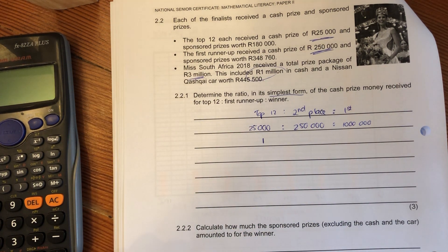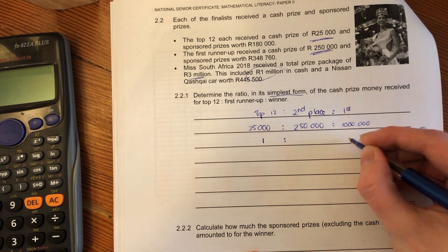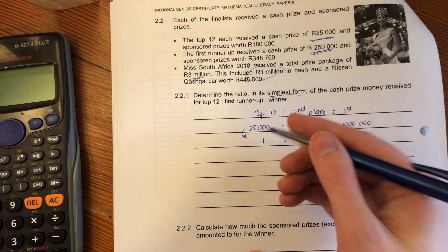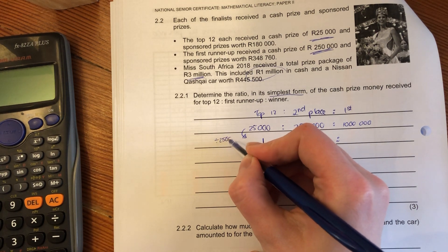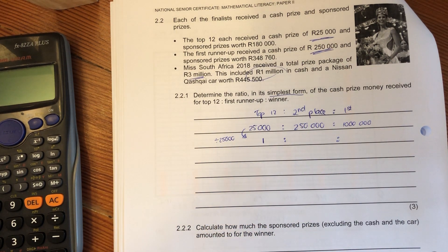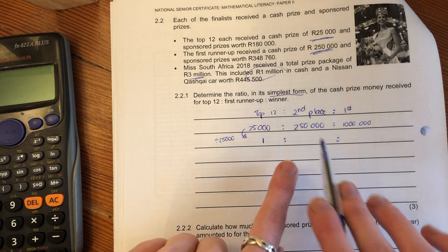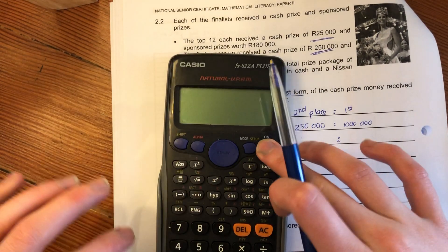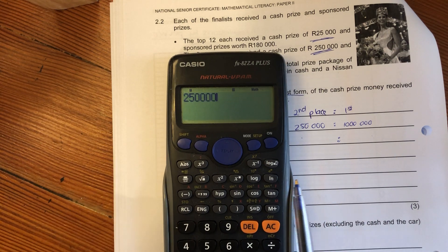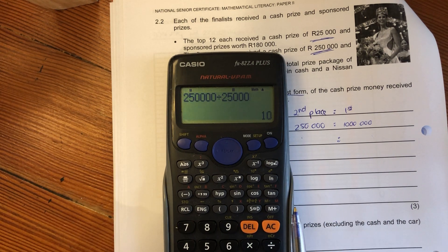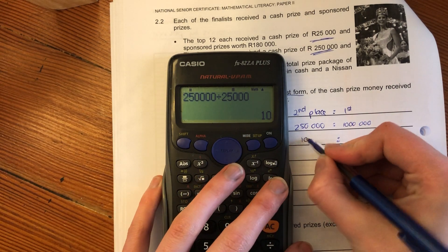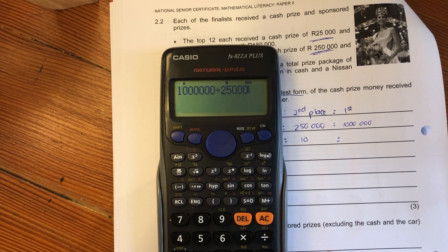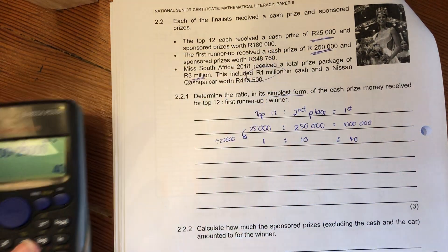The one on the far left should equal one. What do we have to do to 25,000 to get it to one? We divide by 25,000. When I have a ratio, what I do to one side I do to all other sections. Let's divide the middle: 250,000 divided by 25,000 is 10. Let's do that to the last one: 1,000,000 divided by 25,000. Remember your number of zeros. That's 40.